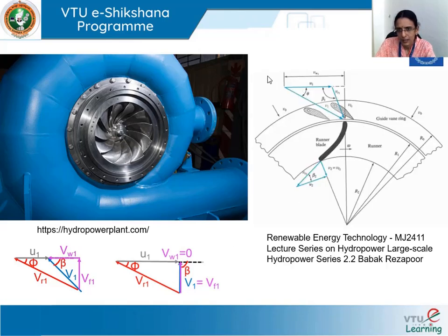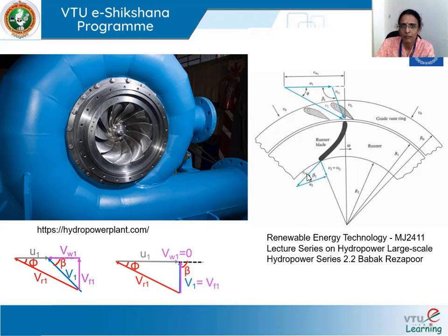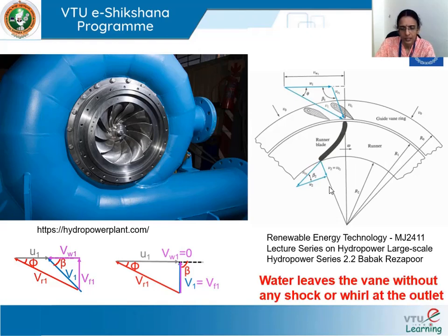Water enters the vane tangentially at the inlet and leaves tangentially — the relative velocity is tangential to the vane. We maintain a very small vane angle at the outlet, and the speed is adjusted so that the absolute velocity is radial at the outlet. This is how we ensure that water leaves the vane without any shock or whirl at the outlet.